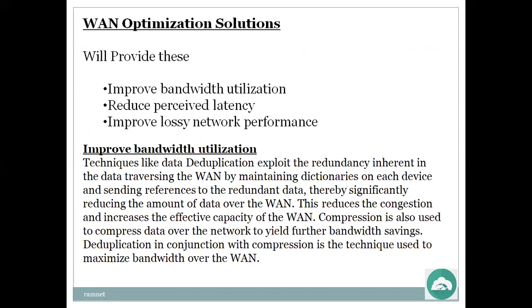What are the solutions? We provide: improved bandwidth utilization, reduced perceived latency, and improved lossy network performance. To improve bandwidth utilization, techniques like data deduplication exploit the redundancy inherent in data traversing the WAN — by maintaining dictionaries on each device and sending only the differences — significantly reducing the amount of data over the WAN, reducing congestion and increasing effective capacity. Compression is also used to yield further bandwidth savings. Deduplication in conjunction with compression maximizes bandwidth over the WAN.